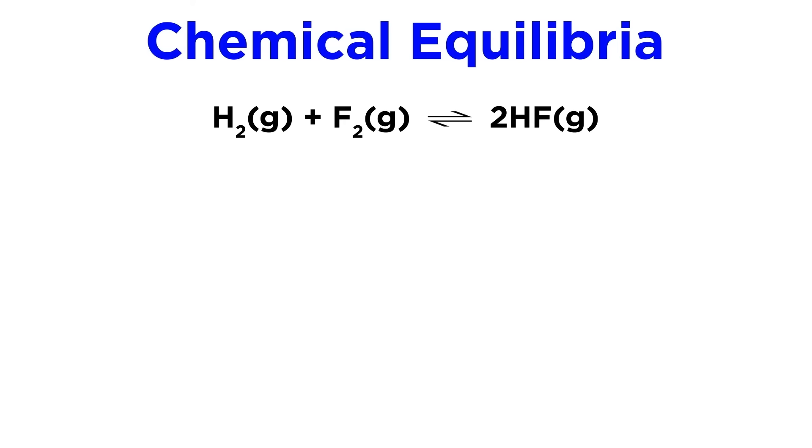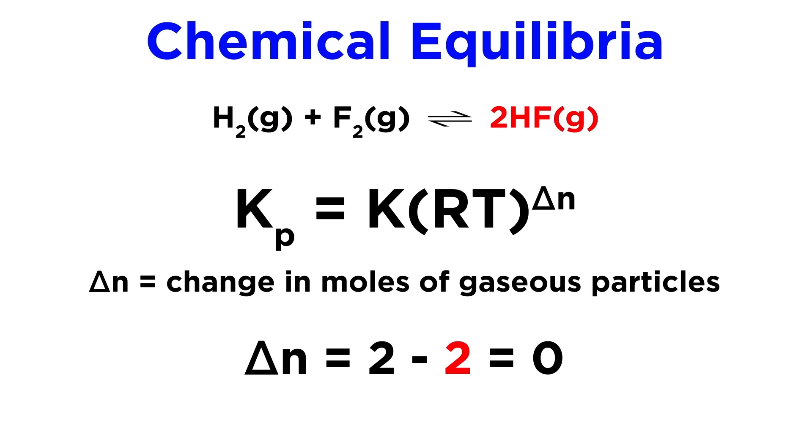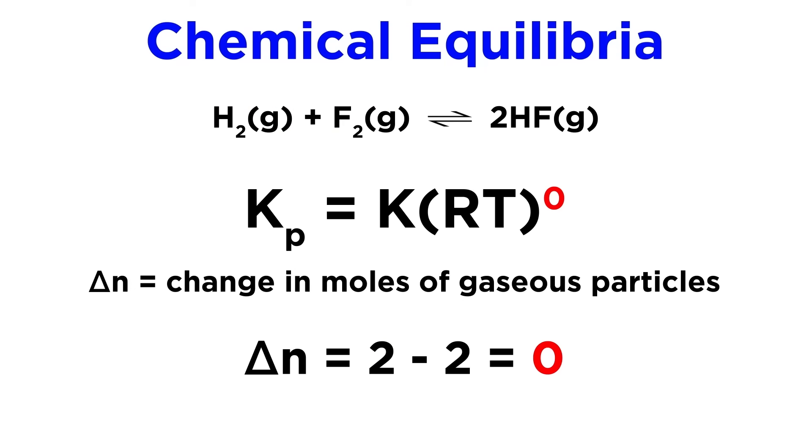But for something else, like the synthesis of hydrogen fluoride gas from hydrogen and fluorine gases, we start with 2 moles and end with 2 moles. So delta N equals zero. That means this term reduces to one, and Kp will be equal to K. This is a subtle point, but it is important to be aware of.